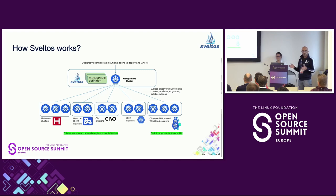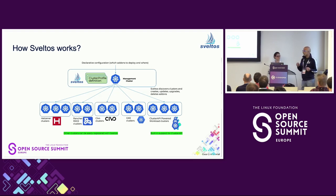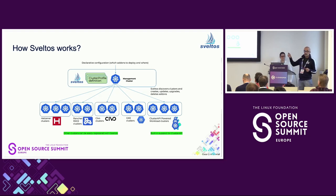Sveltos is not limited to Cluster API. If you have any other Kubernetes cluster — whether on-prem or in the cloud — you can register it to be managed by Sveltos using the Sveltos CLI, which is a one-line command. The only requirement is network connectivity from the management cluster to the managed cluster. Any cluster created with Cluster API or registered manually gets a cluster instance in the management cluster, and those cluster instances are namespaced.